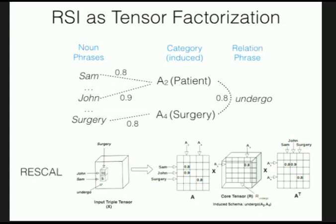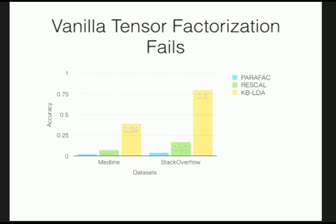After applying two versions — PARAFAC and RESCAL — to two datasets, and comparing against the state-of-the-art baseline KBLDA (an LDA-based topic modeling approach), we failed miserably on both. Higher is better, and we were well below the baseline. That's what research is like — the first thing you try usually doesn't work. But if you persist, you get to the next part.